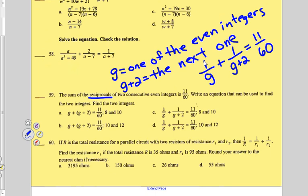So I've narrowed it down to C and D. What's right? 8 and 10, or 10 and 12? I'd probably test them both to see which one's right. Is it 8 and 10? Is 1 eighth plus 1 tenth, 11 sixtieths?